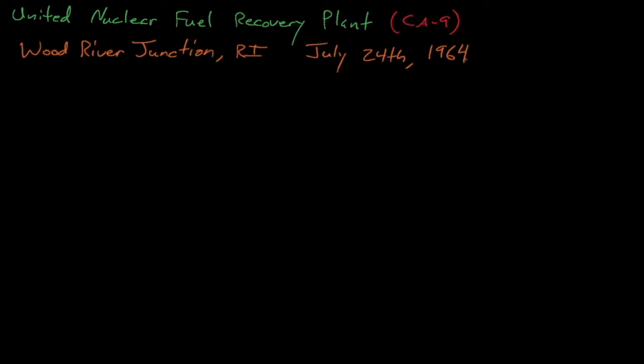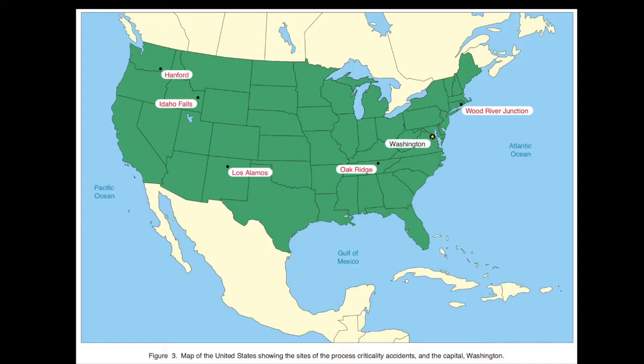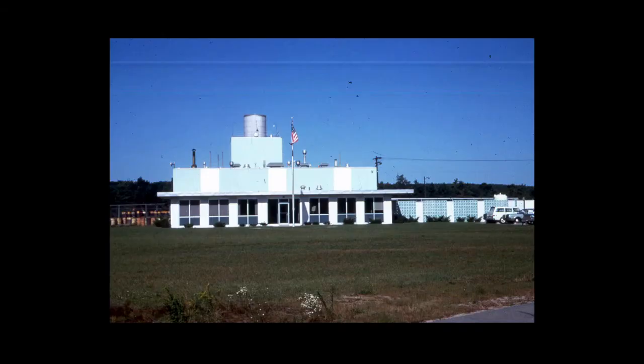This accident took place at the United Nuclear Fuels Recovery Plant in Wood River Junction in Rhode Island, which was designed to recover highly enriched uranium from scrap. The facility received already dissolved scrap in the form of uranyl nitrate, and then they purified and concentrated this uranium using tributyl phosphate mixed with kerosene. After the final acid strip, the uranium solution was purified to remove any residual organic compounds using trichloroethane, or TCE.